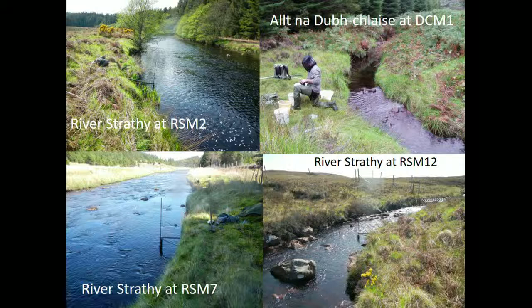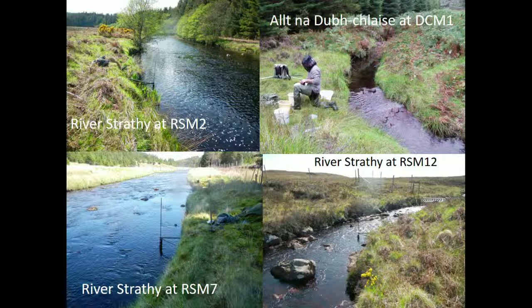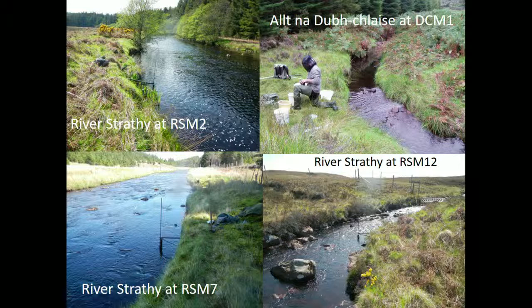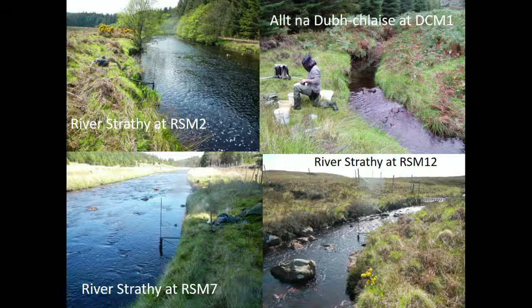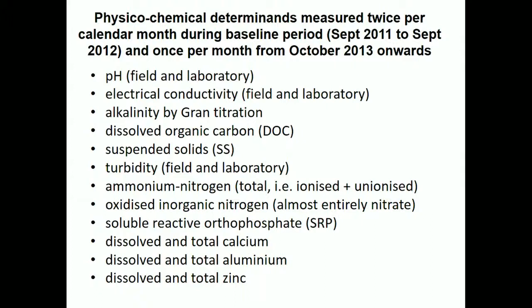These are example photographs of the sample sites. RSM2 is in the lowest stretch — a reasonable, moderate-sized river. RSM12 is your typical peatland-surrounded catchment: bog and wet heath. The out-due clash is within the forested part, which was clear-felled as part of the work. Measurements included pH in field and laboratory from dip samples, along with electrical conductivity, alkalinity, DOC, suspended solids, turbidity, nitrogen as ammonium and nitrate, phosphate, calcium, aluminium, and zinc. However, I will only be covering acidity — pH.